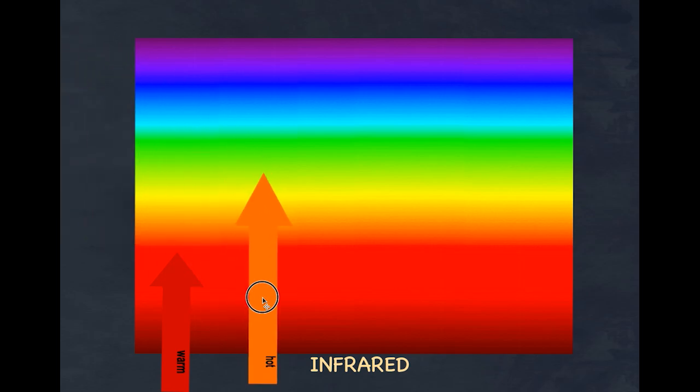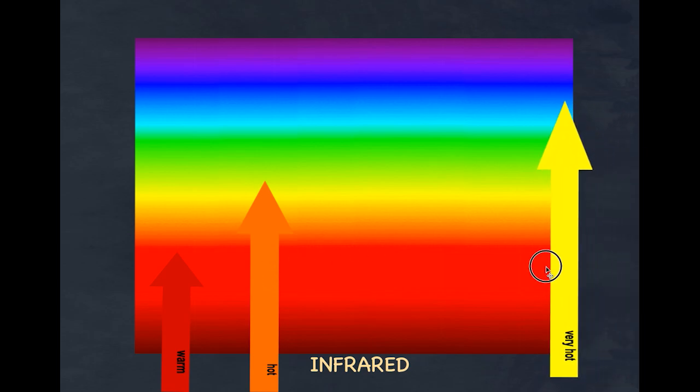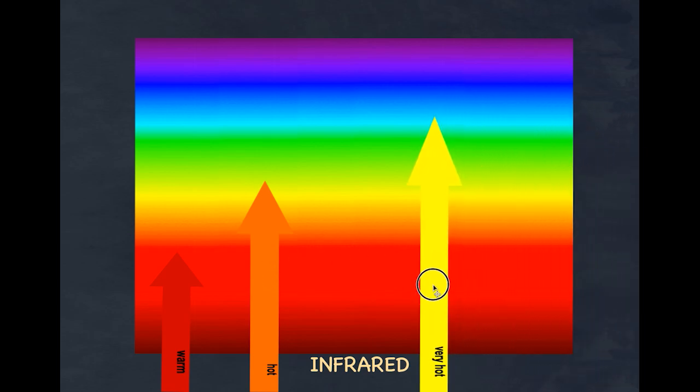As something gets hotter you may find that yes we're still getting heat, we're still getting red light, but we start now getting a little bit more the orange and yellow light and our eyes combine that and it appears orange. If something gets even hotter we have infrared radiation and all these colors but it's now emitting also green light as well.